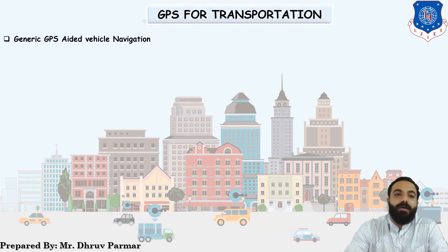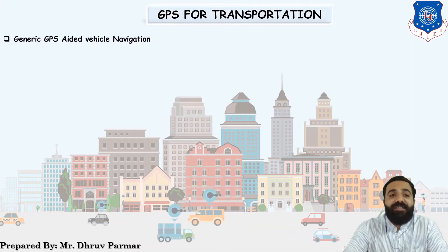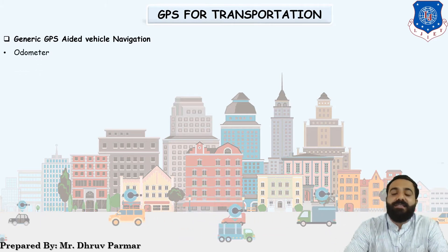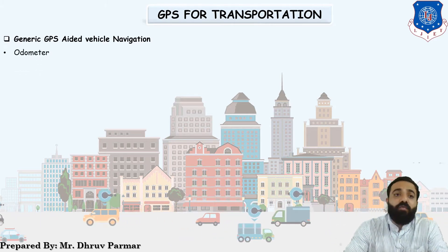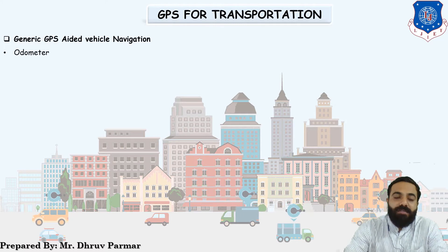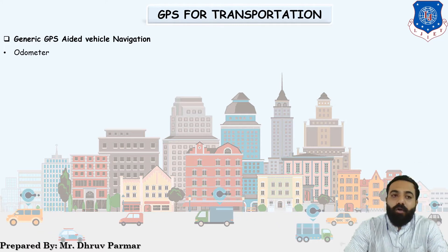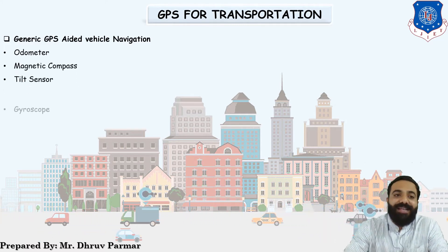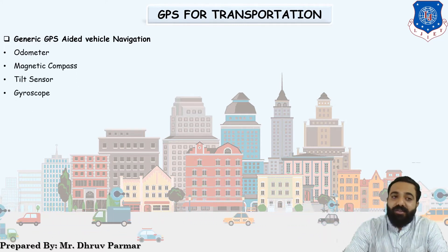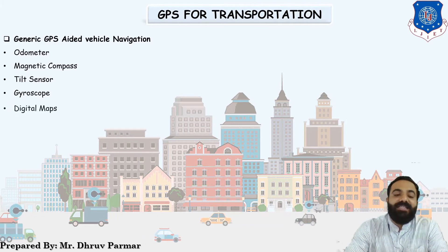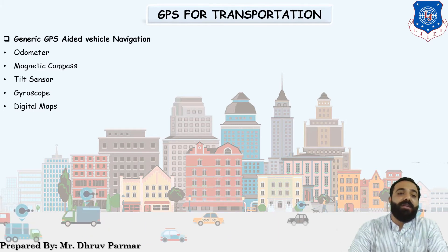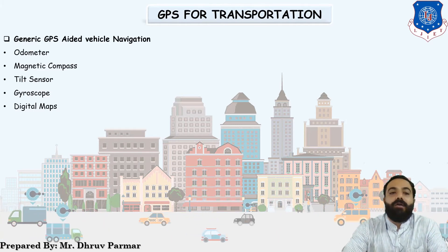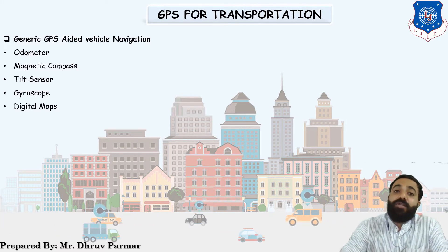There are generic GPS-aided vehicle navigation systems. The types of systems used are: odometers, magnetic compass, tilt sensor, gyroscope, and digital maps. There are a total of five types of GPS-aided vehicle navigation systems.